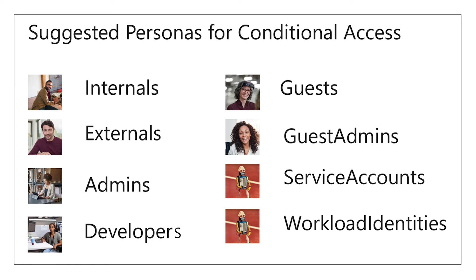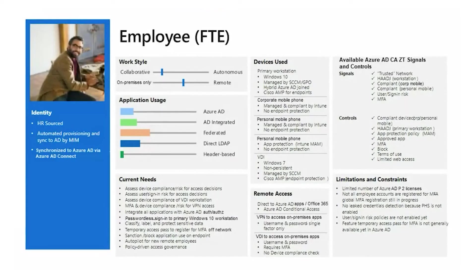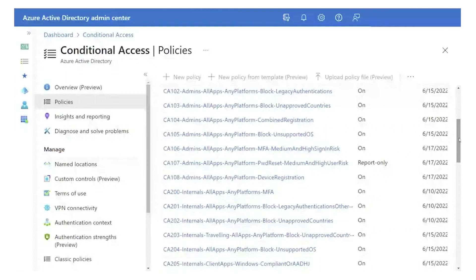That extends to identities that aren't real humans, like service accounts and workload identities. We go through an assessment and figure out all these personas, then for those personas we determine the right level of access. For example, an internal member of staff might be allowed restricted BYOD access but not to all your apps. An external consultant we'll let get a little bit of access, but again not to all apps and maybe only under certain circumstances, like if they're connected over a VPN.